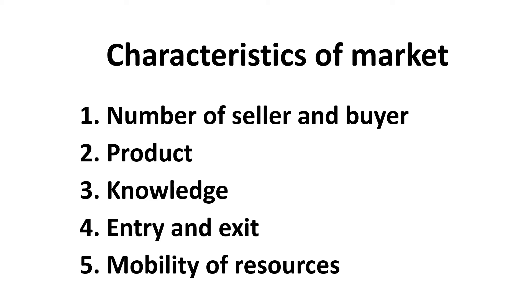To classify the types of market, we have to look at their characteristics. There are five characteristics that we have to consider. First, number of sellers and buyers. Second, the characteristics of product. Third, the characteristics of knowledge. Fourth, the condition upon entry and exit. And fifth, the mobility of resources.